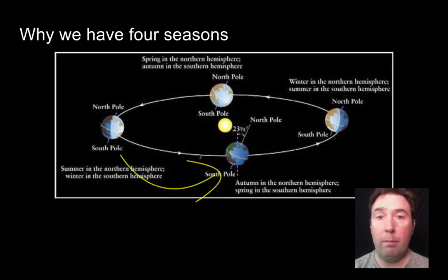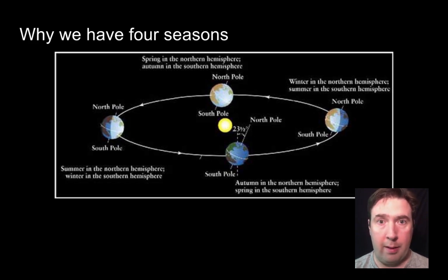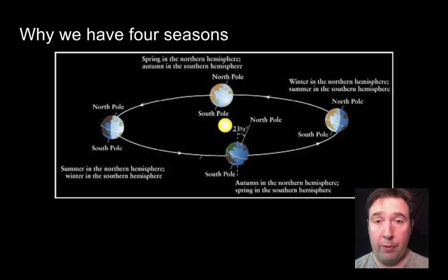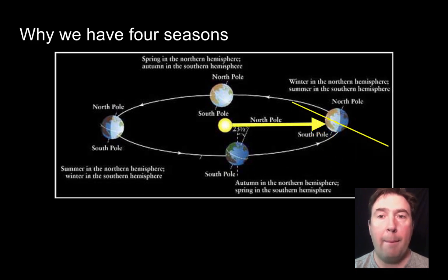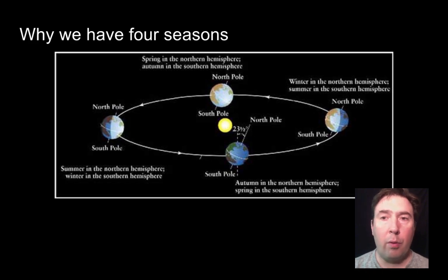Continuing to follow the arrows, we move toward the diagram closest to us in the center, which is again a mirror of the top: equal distribution of light above and below the equator. So now we are in autumn in the Northern Hemisphere and spring in the Southern Hemisphere. Lastly, moving to the right, we see more direct sunlight striking below the equator — in the Southern Hemisphere — making it summer in the Southern Hemisphere and less direct sunlight reaching the Northern Hemisphere.